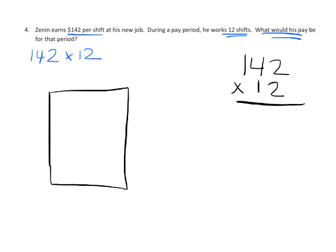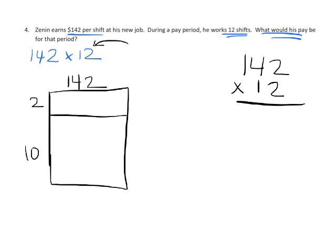In our visual model we think of a rectangle that is 142 units wide and 12 units tall, but we're going to break up that 12 into a 10 and a 2 — essentially we're decomposing. Now we find the area of each smaller rectangle. The 2 by 142 rectangle gives us an area of 284. The big rectangle, 10 by 142, gives us an area of 1420 — that's easy because when multiplying by 10 you just keep the numbers and add a zero.